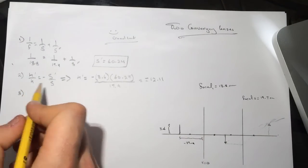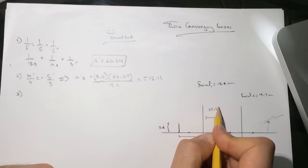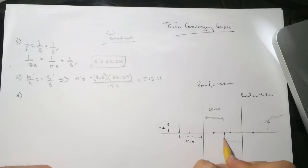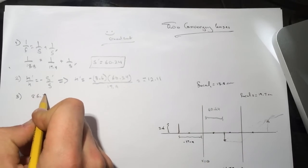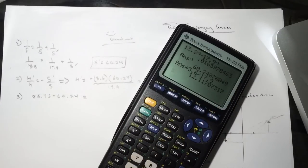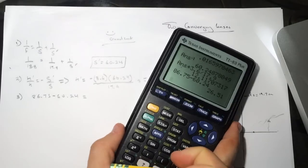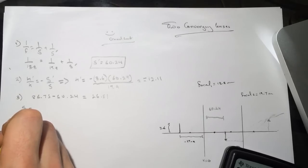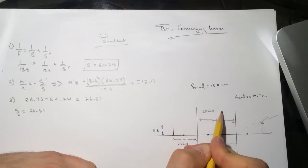The distance from here to here is 60.24. We want to know the distance between the object, the new object which is the image from one, and the second lens. We'll do that by doing 86.75 minus 60.24, which equals 26.51. So now here, this is the S now for the second one. S2 equals 26.51. Distance from here to here is 26.51.